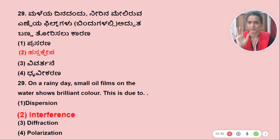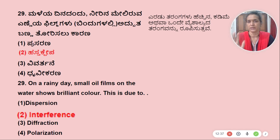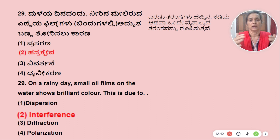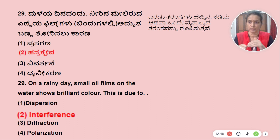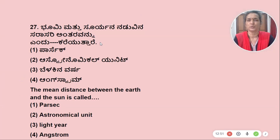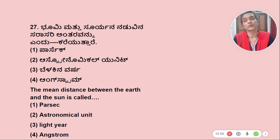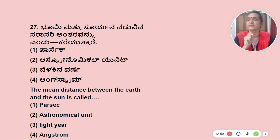There are two waves — the tarangas — and they are the same as each other, producing an interference pattern in the thin film region.